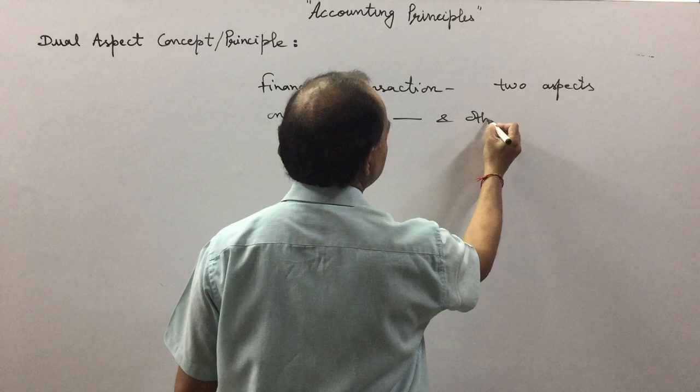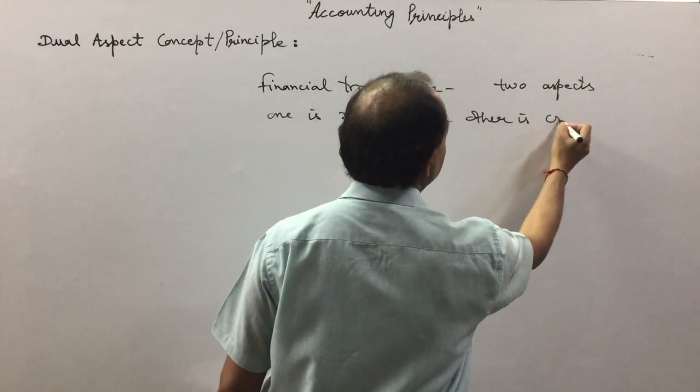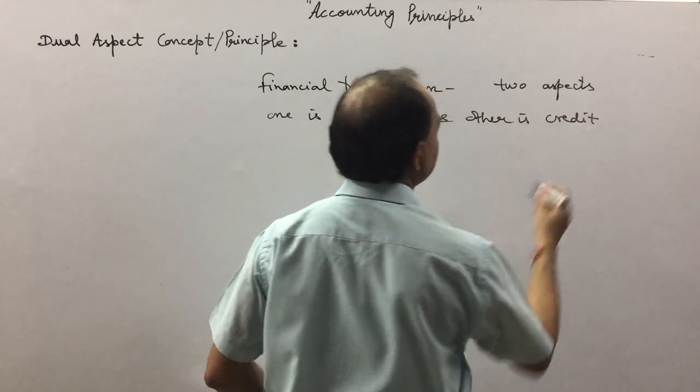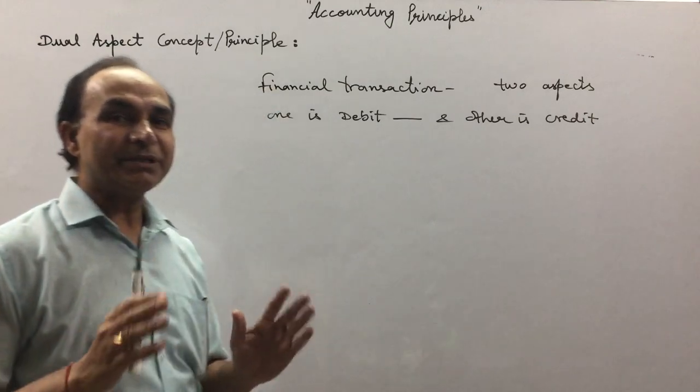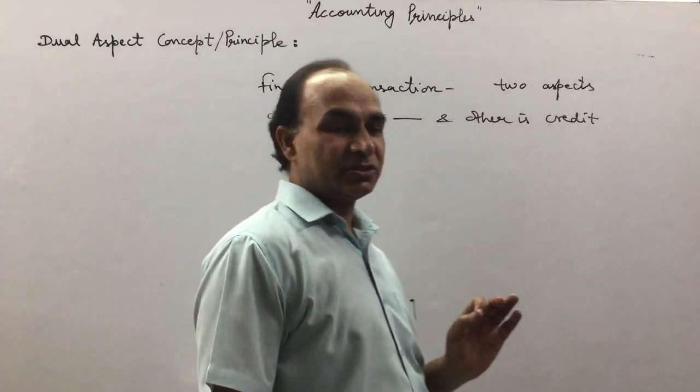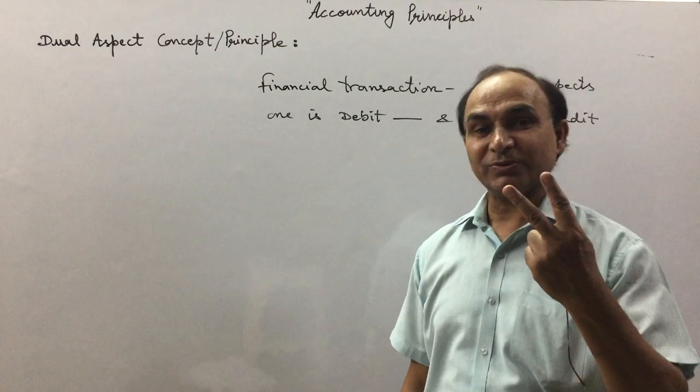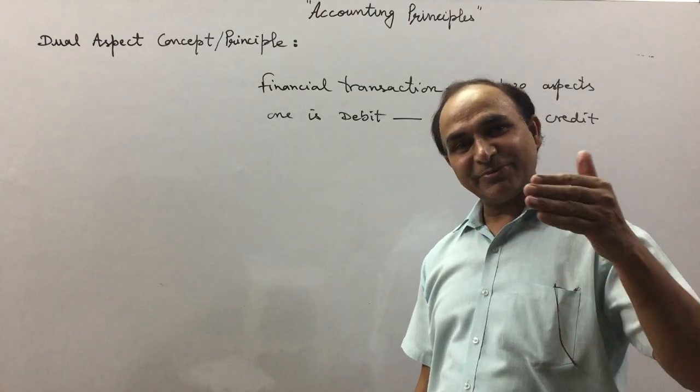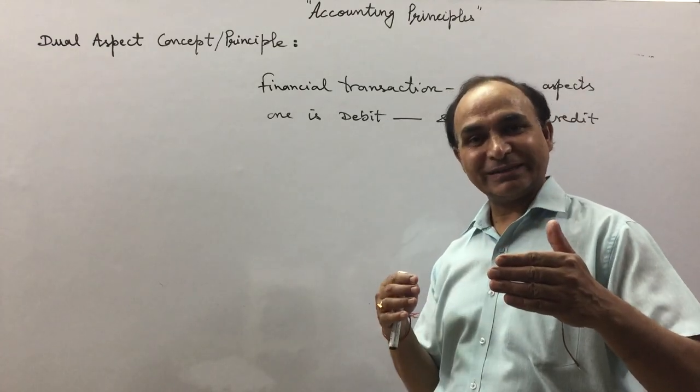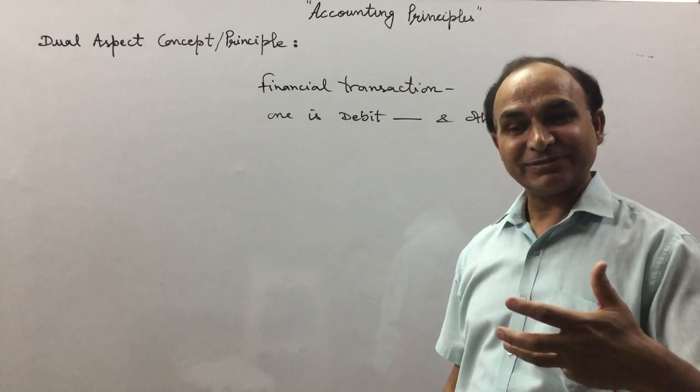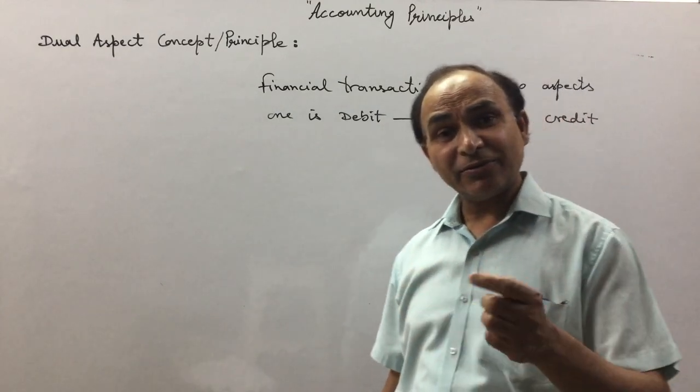...and the other is credit. It simply means that any financial transaction will have two aspects - one account will be debited and the other will be credited. For every debit, there is a credit of an equal...